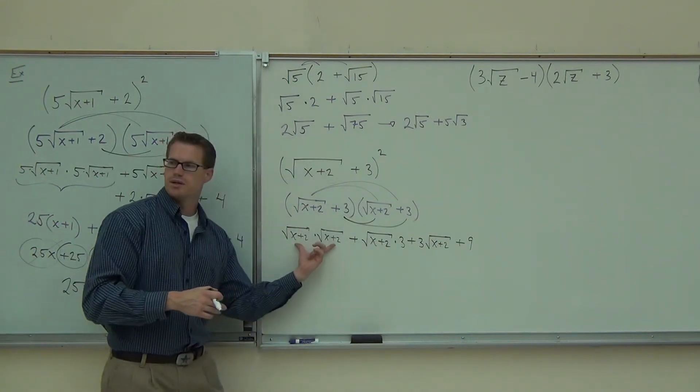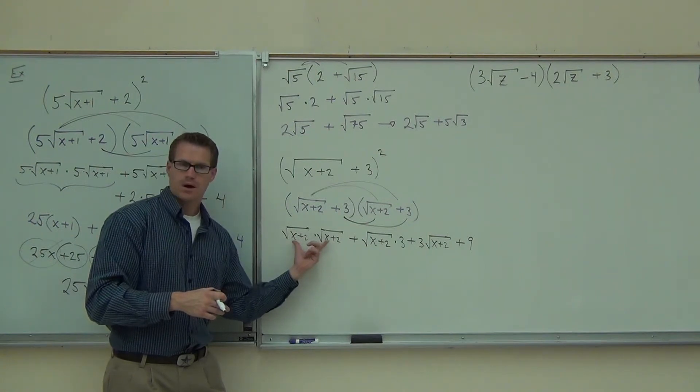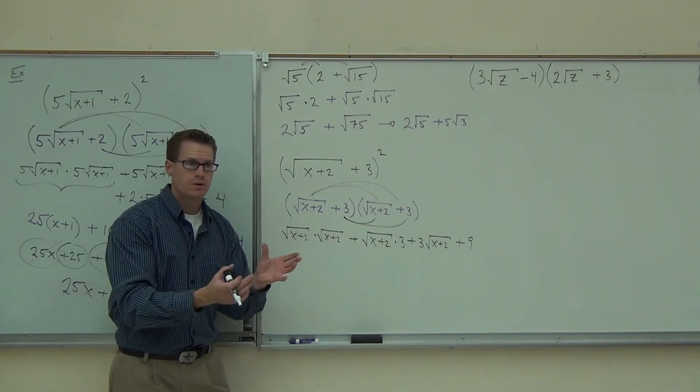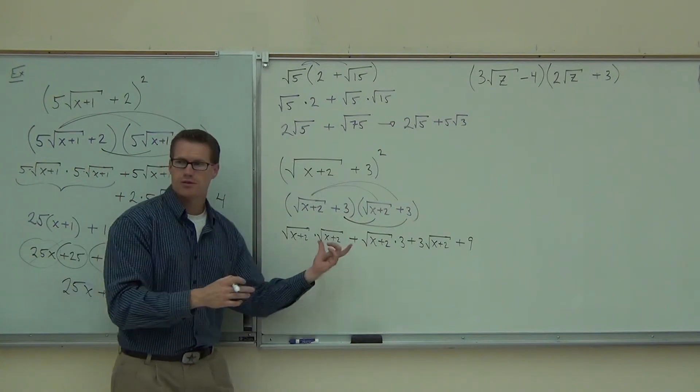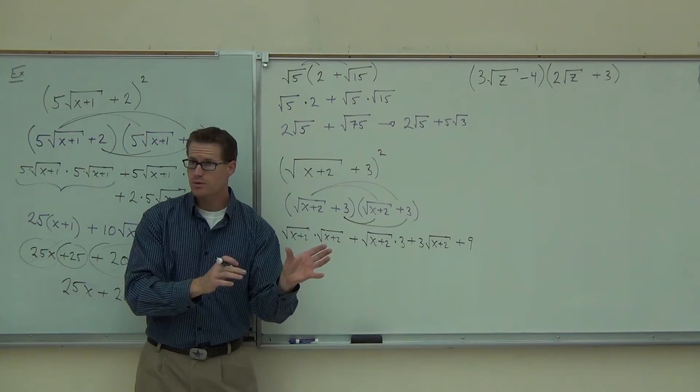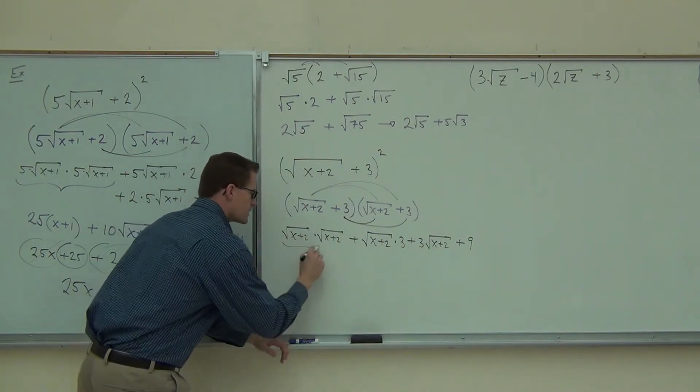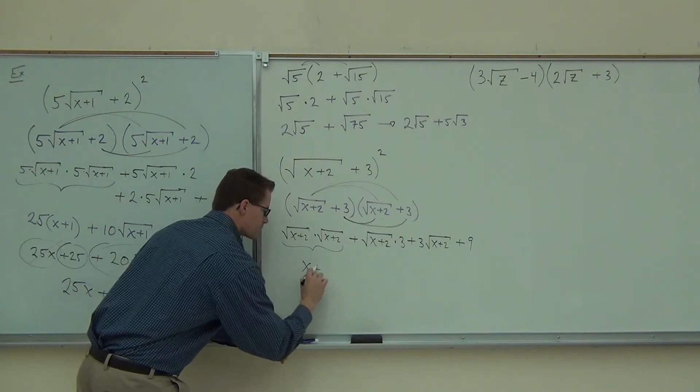How much is this expression going to give you altogether? Are you going to have a root? No. Because you know that a square root times itself gives you what? It gives you another square root? Or it gives you the radicand? The radicand. Okay. So when I combine these two things here, I'm just going to get x plus 2.